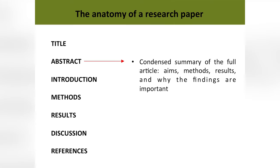You should have an abstract, which is essentially a condensed summary of the full article. It says what the aims are, what the methods were, what the results were, and why those findings are important — what the main conclusions are. This is the way a scientific paper puts everything up front. It's not like writing a novel where you want to reveal part of the story towards the end. In a scientific paper, everything goes up front. You want the reader to get as much of the story as possible from that abstract.